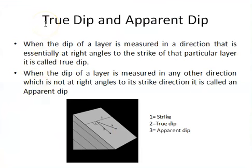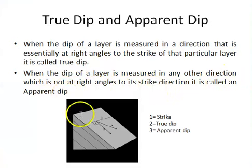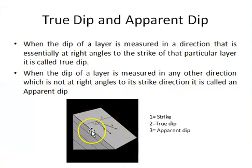There are two types of dip: true dip and apparent dip. When the dip of a layer is measured in a direction essentially at right angle to the strike of that particular layer, it is called true dip. When the dip of a layer is measured in any other direction which is not at right angle to its strike direction, it is called apparent dip. As clear from this diagram, number 1 represents strike, 2 is true dip which is at right angle to the strike, while 3 is apparent dip which is at some other angle other than right angle to the strike. These are some basic terms used in structural geology.